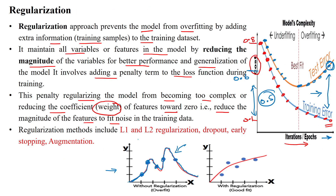There are many regularization methods: L1 regularization, L2 regularization, dropout, early stopping, and augmentation. These algorithms can be used to reduce or avoid overfitting during the training and testing of the model, improving the model's performance by avoiding overfitting. Thanks for watching.